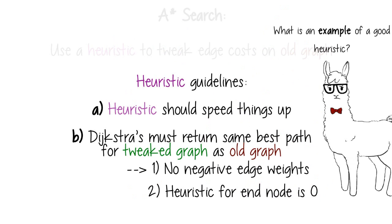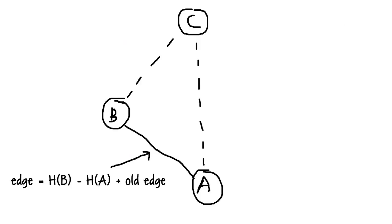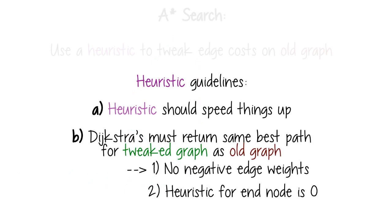So what is an example of a good heuristic? One that works really well for travel problems is just normal Euclidean distance to the end. It obeys rule number one because of how triangles work, these two sides combined could never be shorter than that one, or you just broke geometry, and it very obviously obeys rule number two. Awesome.